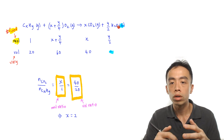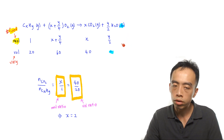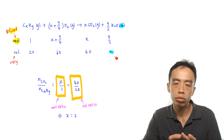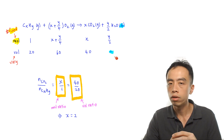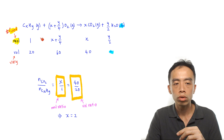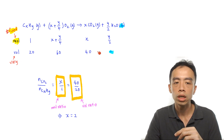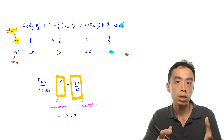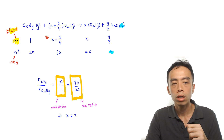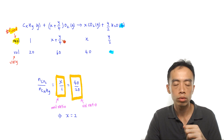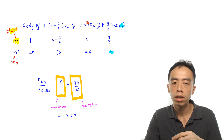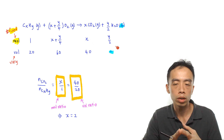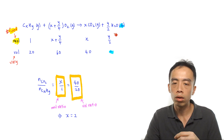The balanced equation is: CₓHᵧ + (X + Y/4) O₂ → X CO₂ + Y/2 H₂O. The table has two rows: mole ratio and volume ratio. Mole ratio is copied directly from the coefficients: 1, (X + Y/4), X, and Y/2 for water (though water is liquid so we leave it out). The volume row comes from the question: 20 cm³ for hydrocarbon, 60 cm³ for O₂ reacted, and 40 cm³ for CO₂.